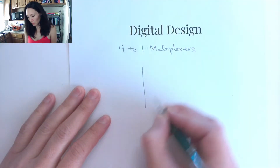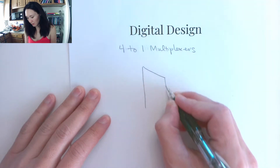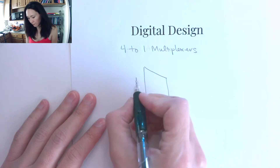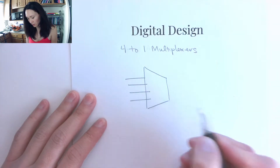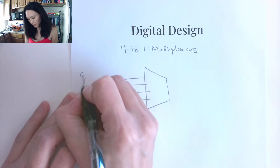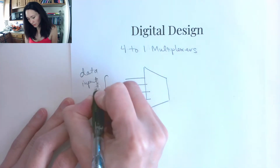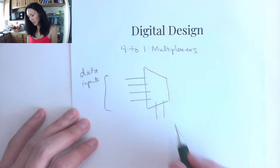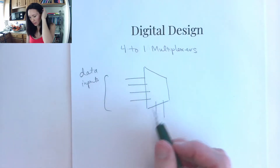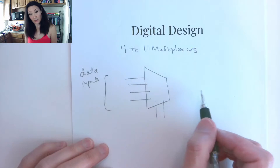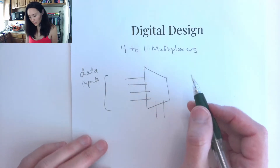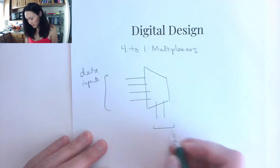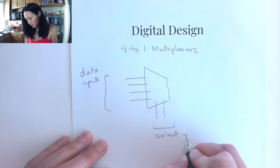Hi students, let me show you the four-to-one multiplexer. It still has this kind of sideways trapezoidal shape, and we're going to have four data inputs coming in on the left. These are the data inputs, and then down here we have our select lines, which are also inputs. These are going to determine which one of the data inputs gets selected and piped to the output. For the four-to-one multiplexer, we actually have two select inputs, as opposed to the two-to-one multiplexer which only has one.